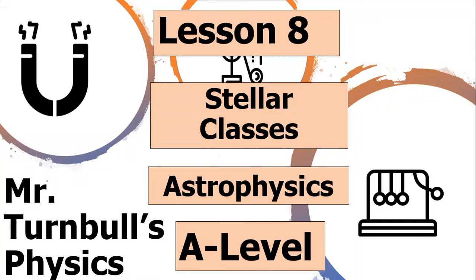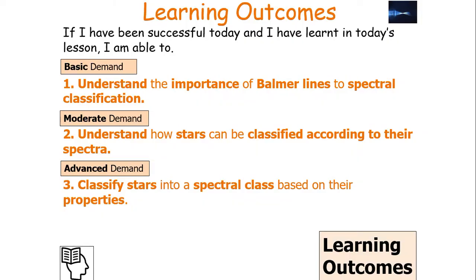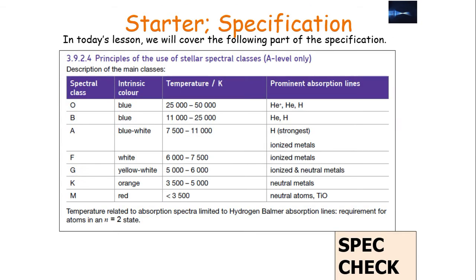Hello and welcome to today's lesson looking at stellar classes in the astrophysics option of AQA A-level physics. In today's lesson, we're going to try and understand the spectral classification of stars. If we're successful, we can understand the importance of Balmer lines, the spectral classification, understand how stars can be classified according to their spectra, and classify stars into a spectral class based on their properties, which links into the AQA A-level physics specification for the astrophysics option: the principles of the use of stellar spectral classes.